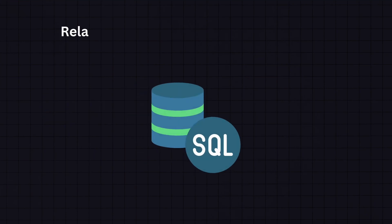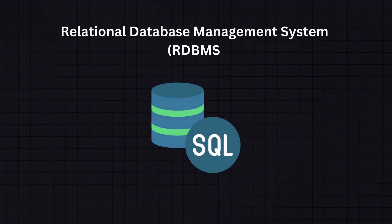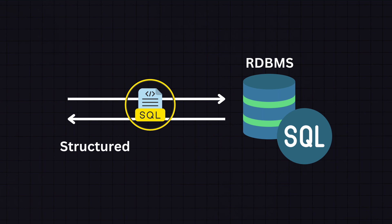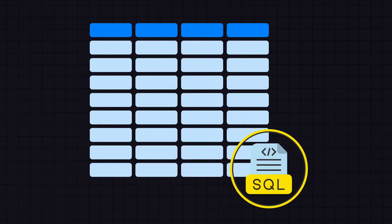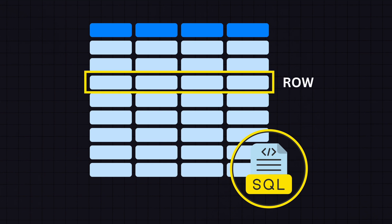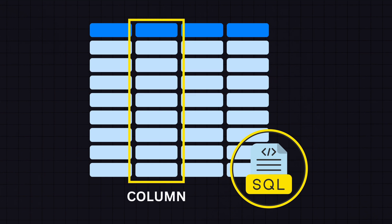An SQL database is a type of relational database management system that uses structured query SQL as its interface for interacting with and manipulating data. In a SQL database, data is stored in tables like spreadsheets with rows and columns. Each row represents a single record and each column represents a field within the record.